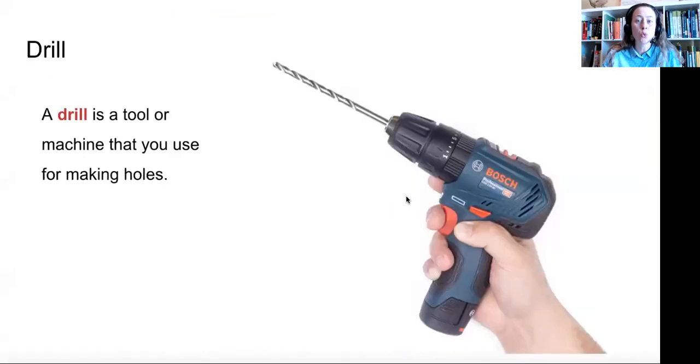Let's go to the next word: drill. A drill is a tool or a machine that you use for making holes. This is important because Mr. Dursley actually works with drills. He has a shop where he sells drills — kind of a typical hardware store. And so, he talks a lot in the story about hoping to sell a lot of drills today. So I thought it would be an important item for you to be aware of. Drill.